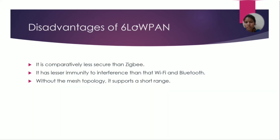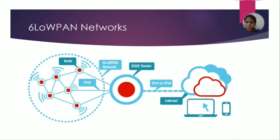Disadvantages of 6LoWPAN: it is comparatively less secure than ZigBee. It has lesser immunity to interference than Wi-Fi and Bluetooth. Without mesh topology, it supports only a short range. It requires higher power devices to expand the range of low-power devices.